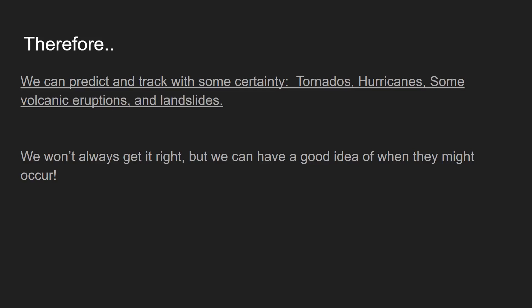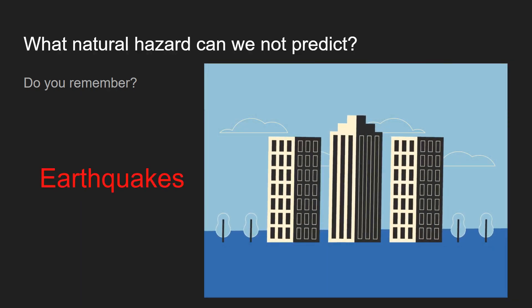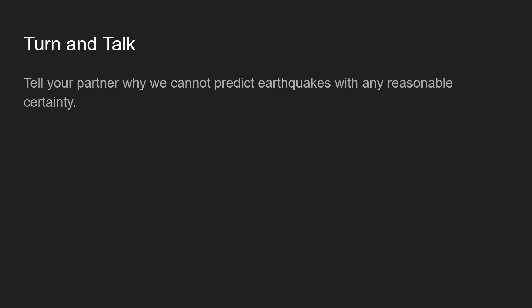So we can, with some degree, predict a volcanic eruption as long as we have seismic data. Just know that some natural hazards we can predict with at least some certainty: tornadoes, hurricanes, some volcanic eruptions, some landslides. We're not always going to get it right, but we have an idea. Now, do you remember the natural hazard we cannot predict? It's earthquakes — we can't predict earthquakes.